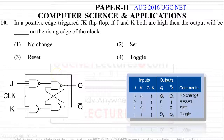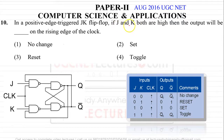Let's look at question number 10 of UGC NET Paper 2. The question is: in a positive edge-triggered JK flip-flop, if J and K both are high — meaning J equals 1 and K equals 1 — what will the output be on the rising edge of the clock?